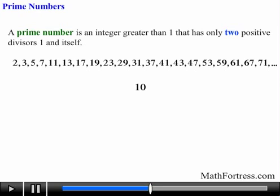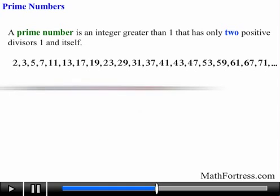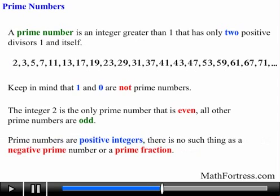For example, the number 10 is not prime since its divisors are 1, 10, 2, and 5 — for a total of 4 divisors. That's more than 2 so it's not considered a prime number. Also keep in mind that 1 and 0 are not prime numbers, and that 2 is the only prime number that is even. All other prime numbers are odd. Prime numbers are positive integers — there is no such thing as a negative prime number or a prime fraction.